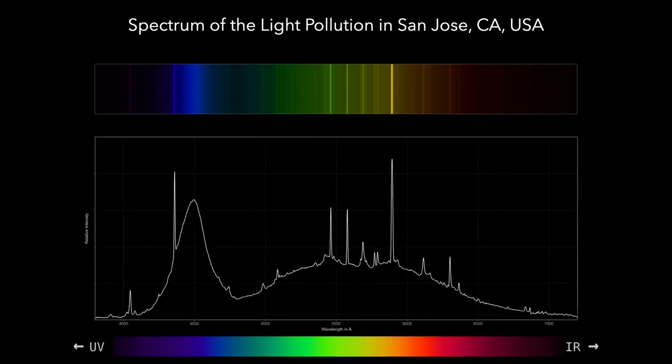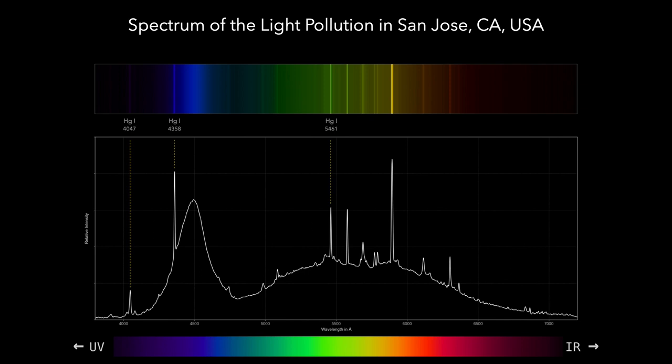First we can see a number of emission lines, which show up as sharp peaks in the spectral profile. Some of those lines, in the blue-green part of the visible spectrum, are caused by mercury vapor lamps, which appear bluish-white to the eye, while other emission lines, mostly in the yellow part of the spectrum, are due to low pressure sodium lamps, which naturally have an amber color.